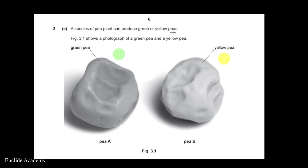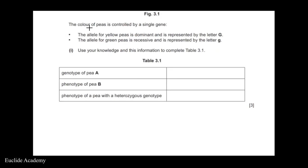This species can produce green and yellow peas, as shown in the diagram. The color of peas is controlled by a single gene — genes store information for a particular trait of an organism. Genes have alternate versions called alleles, which come in pairs, one on each chromosome, to code for a particular characteristic.